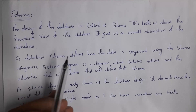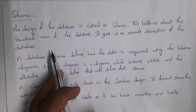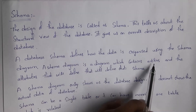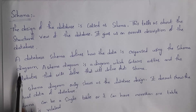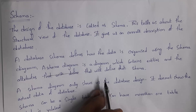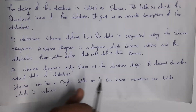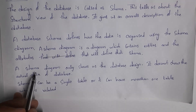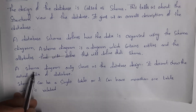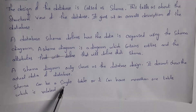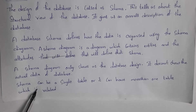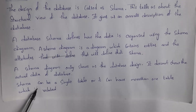A database schema defines how the data is organized using the schema diagram. A schema diagram is a diagram which contains entities — entities are nothing but table names — and attributes, which are nothing but column names. A schema diagram only shows us the database design; it does not show the actual data of the database. Schema can be a single table, or it can have more than one related table. If there is only a single table, we call that single table as schema. If there are multiple related tables, we call those multiple tables as schema.